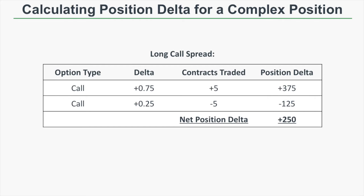Overall, this call spread has a net position delta of plus 250, since we're getting plus 375 from the long calls and negative 125 from the short calls. This means if the stock price increases by $1, we're expected to make $375 on our long calls but lose $125 on our short calls, bringing our net position delta to 250. So for a $1 increase in the stock price, we're expected to gain $250, and if it falls by $1, we're expected to lose $250.